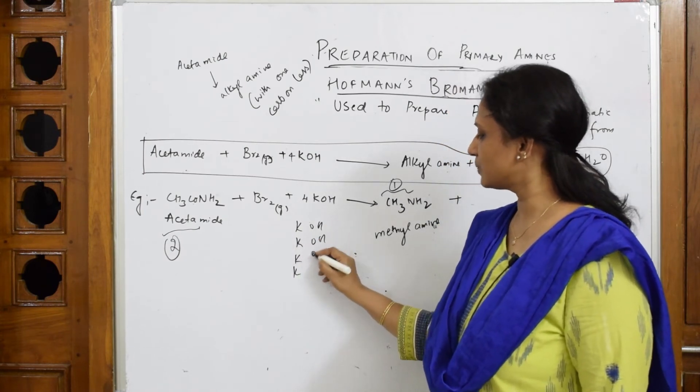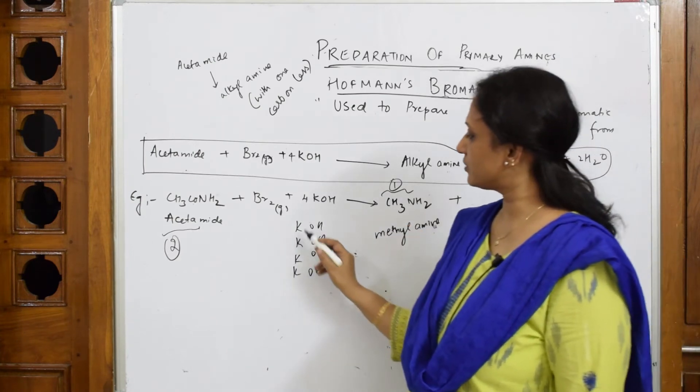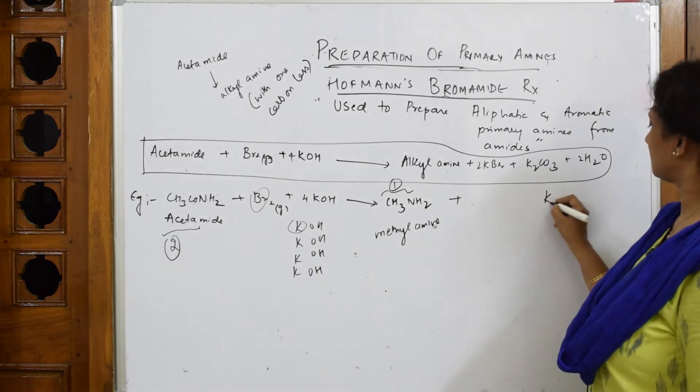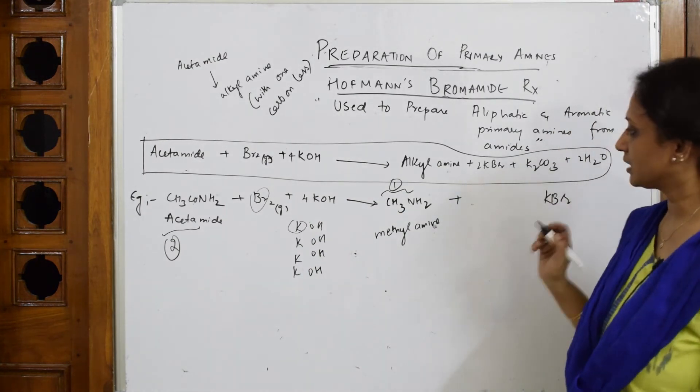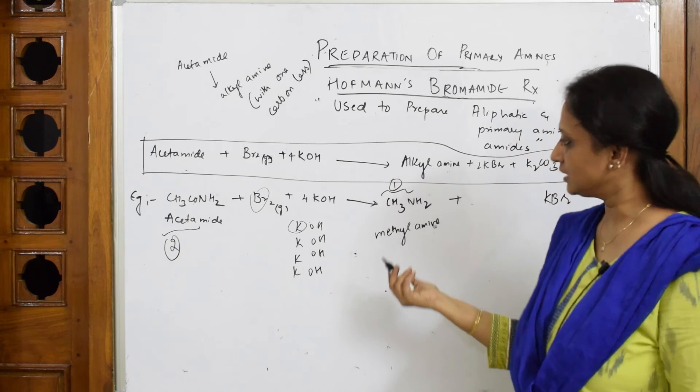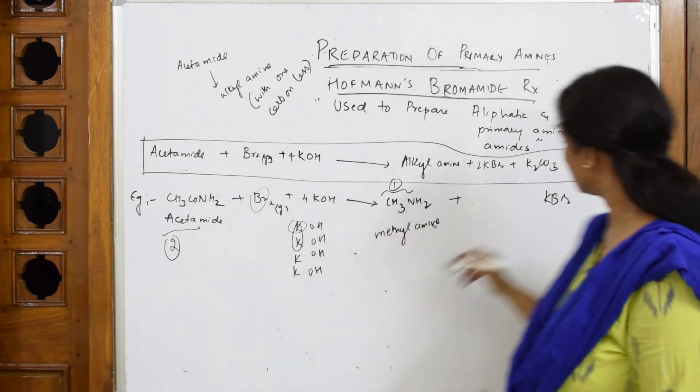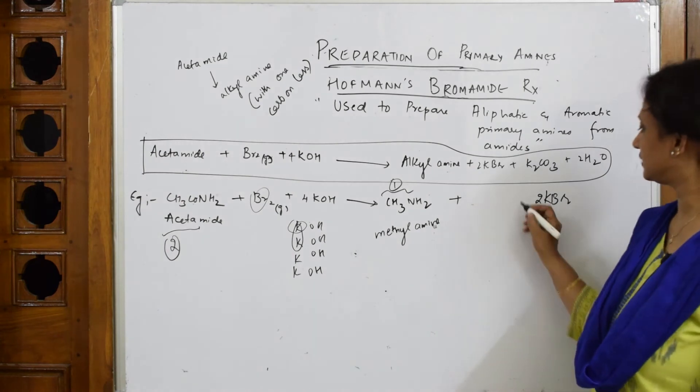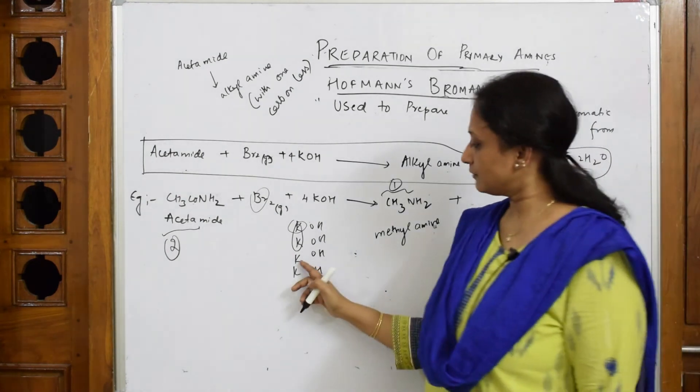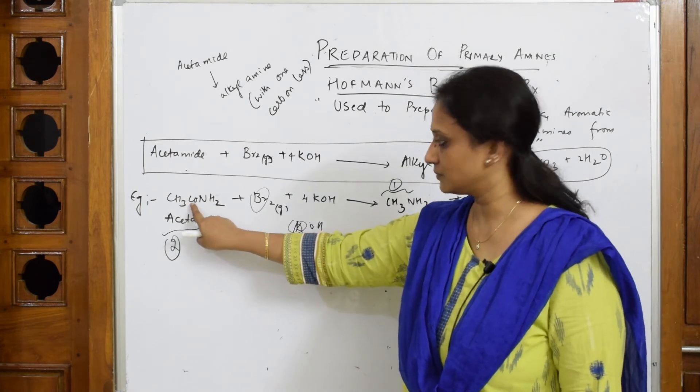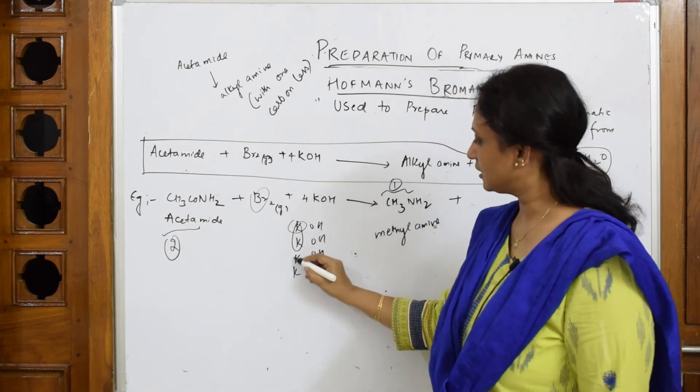You have four potassium. The reaction is very simple. First important thing, your potassium with bromine comes out as KBr. How many did I take? Four. In this KBr, let us pick up these two. Two KBr done, still I have two potassium. You also have CO.